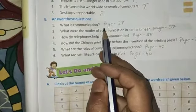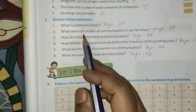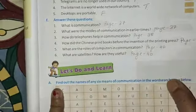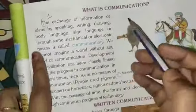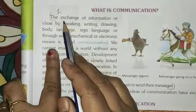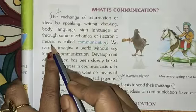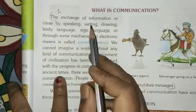Now here I am giving you the page number, and you will see the paragraph and mark it. Answer number 1, what is communication? It is in the page number 37. Here, page number 37, what is communication? From the first paragraph you will write, from the exchange of information to means is called communication. Up to here, number 1 answer.